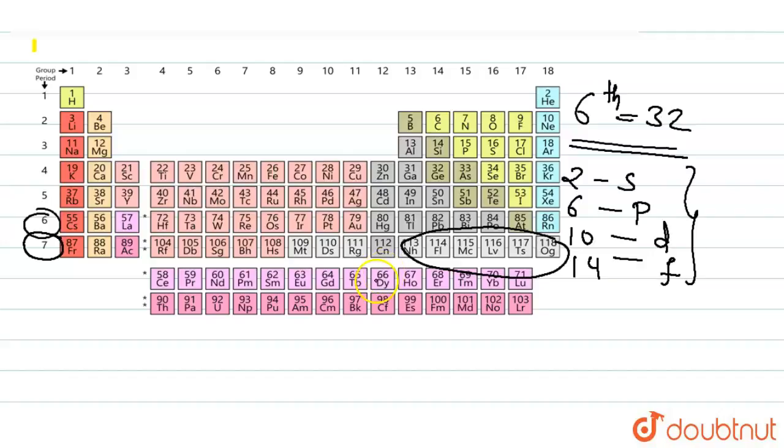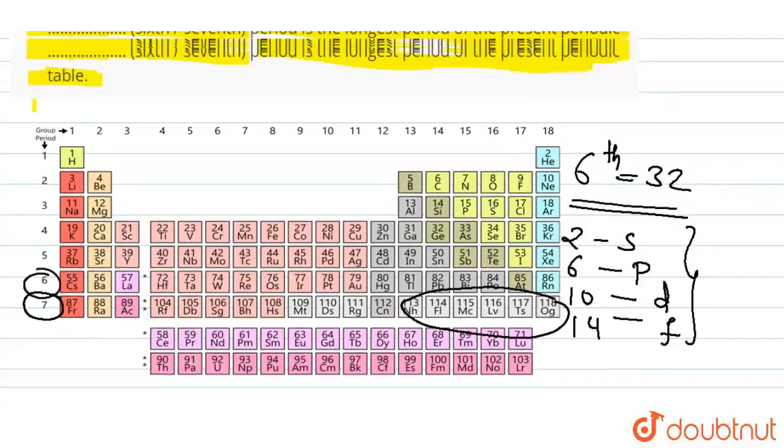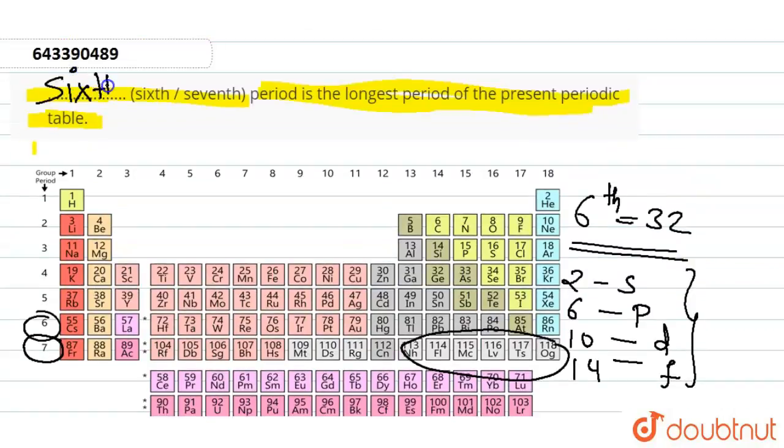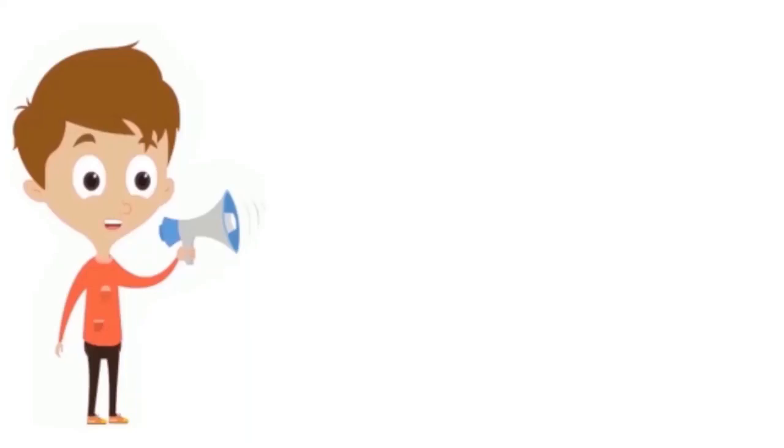So the seventh period is not considered as the longest and our answer in this question is sixth period with 32 elements, considered as from 55 to 86, is considered as the longest.